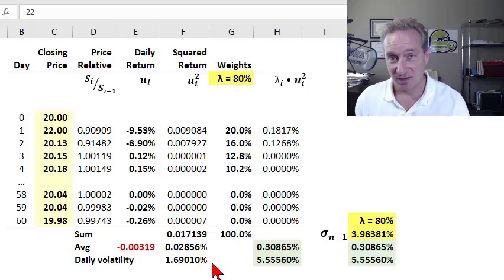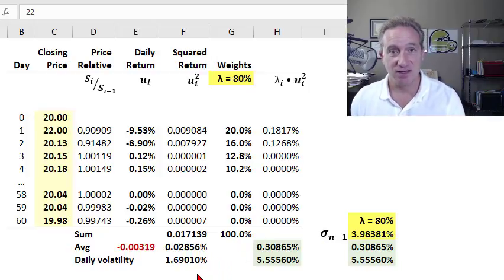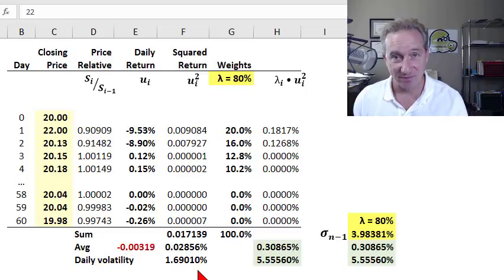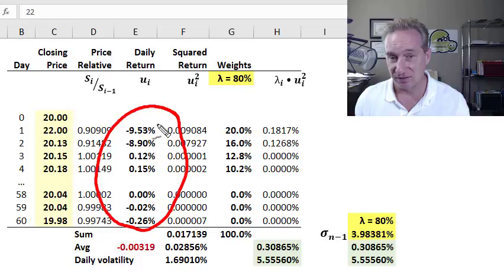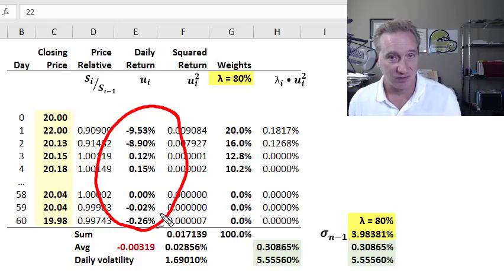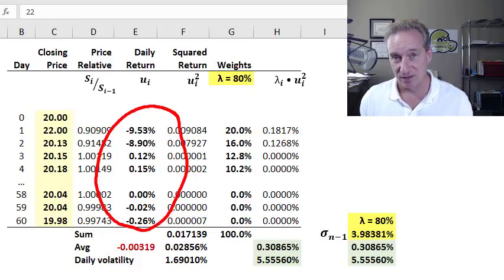As an approach to estimating volatility, the advantage of the exponentially weighted moving average is that it overcomes the key weakness of the historical standard deviation. That weakness is that the historical standard deviation assigns the same weight to all of the returns in the historical window.